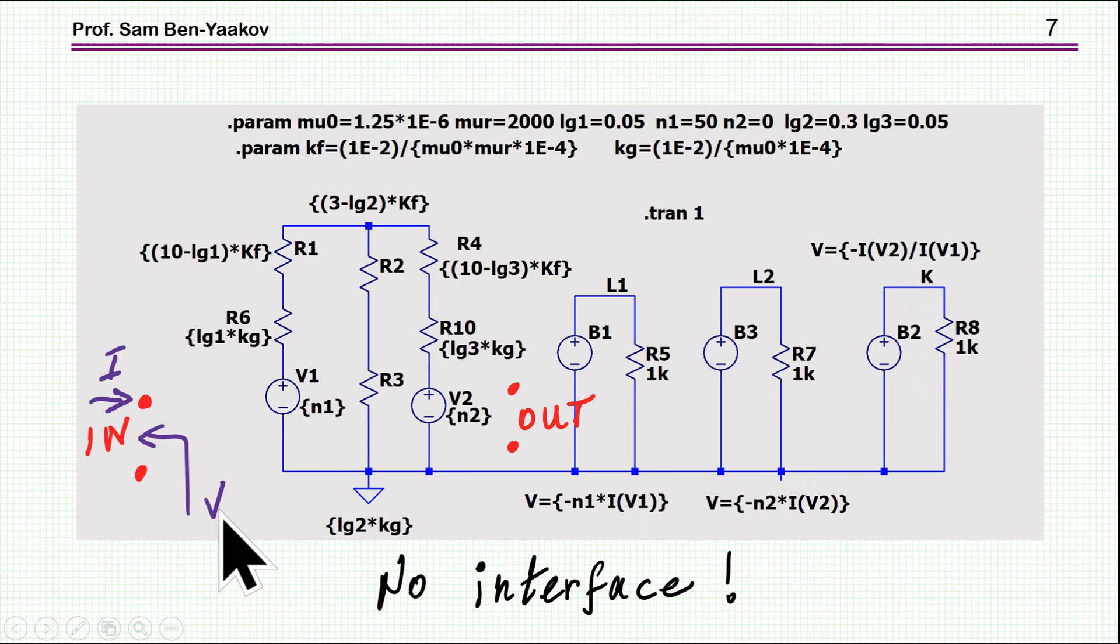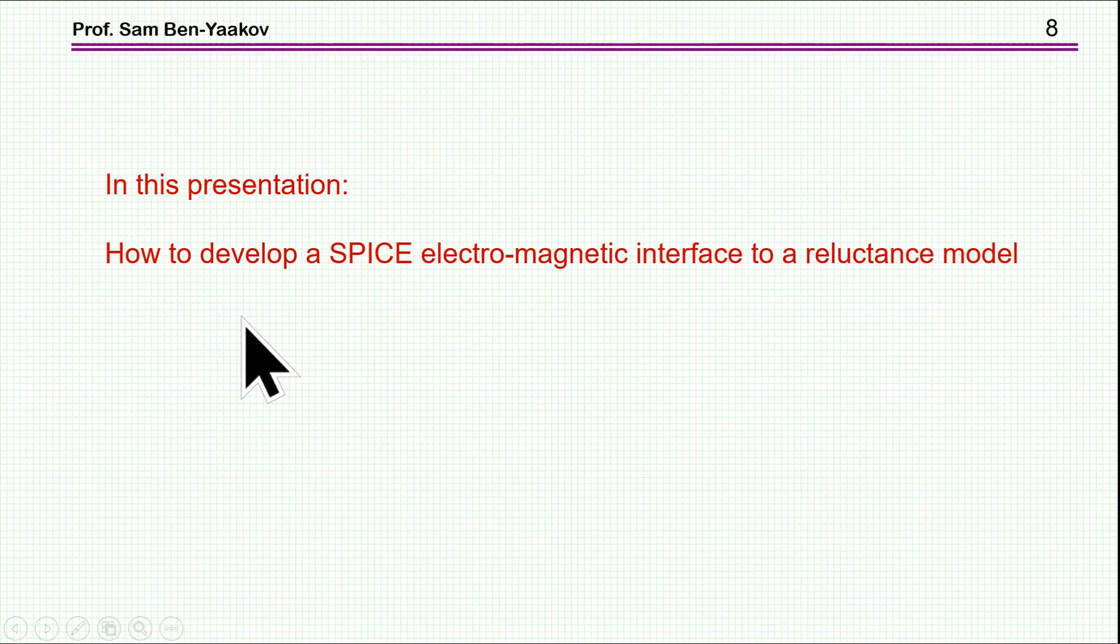What is missing here is the interface. That is, you cannot connect this circuit to an electrical circuit because there are no input terminal and no output terminal, it's just the magnetic circuit itself. So what is missing is this interface that you can connect the terminals, that you connect an electrical circuit, you'll see the effect of the voltage of this magnetic circuit and then the current coming in will be this current that you'll use here. And this is the objective of this second part, to show the interface, the electromagnetic interface, to the reluctance model.